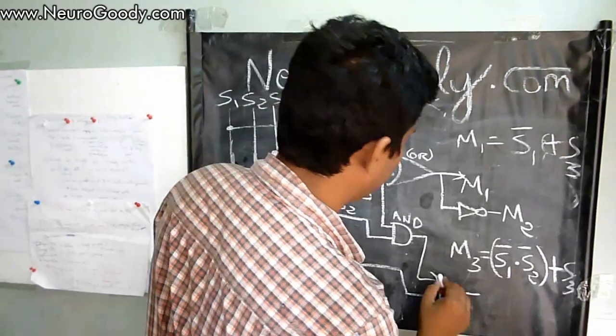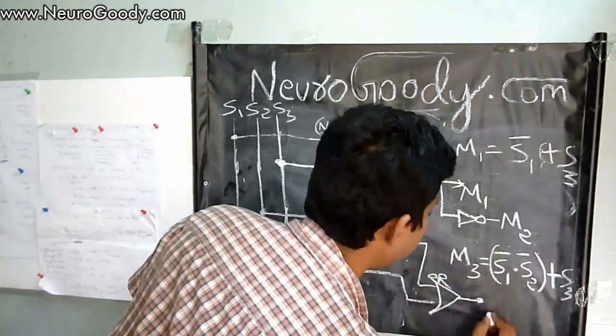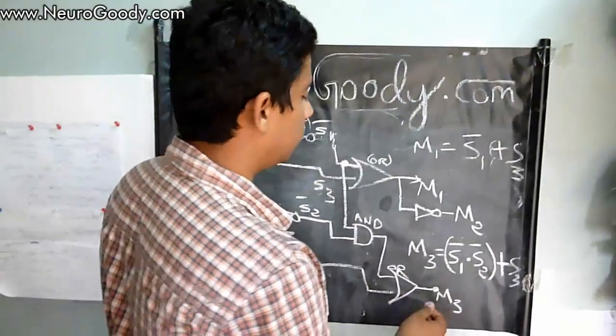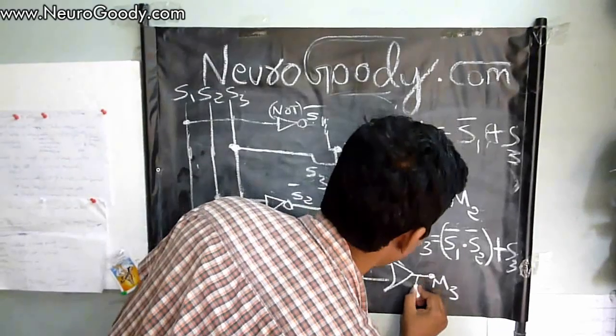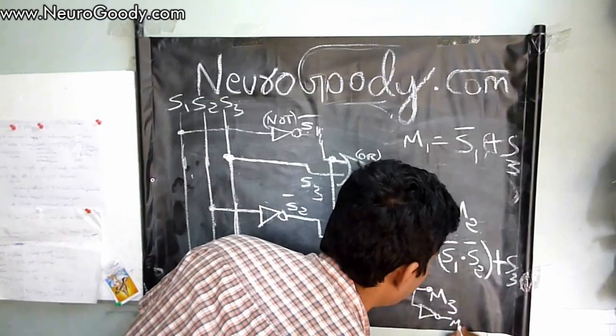Here I will get the output of M3. I have got M3, and M4 is the complement of M3, so let's complement it using a NOT gate. I have got M4 here.